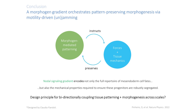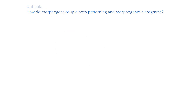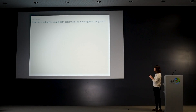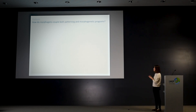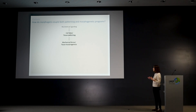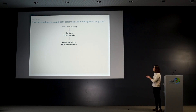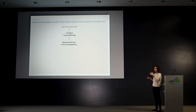What are the next questions that emerge from this work? We found that morphogens or signaling can couple patterning and morphogenetic programs, but the question remains how — how exactly does a signal induce cell fates but also induce mechanical forces? The short answer is we don't know and we have to investigate. The idea in the field has been that biochemical signaling induces different cell fates, which come with specific mechanical properties giving rise to morphogenesis — a very unidirectional and rigid view.